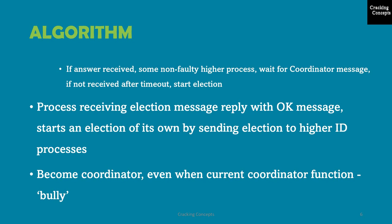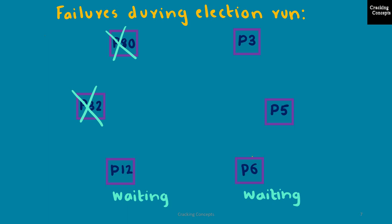A process that receives an election message replies with an OK message and starts its own leader election protocol. When a process is started to replace a crashed process, it begins an election. If it has the highest process identifier, it will decide that it is the coordinator and announce this to the other processes — thus becoming the coordinator even though the current coordinator is still functioning. It is for this reason that the algorithm is called the Bully algorithm.